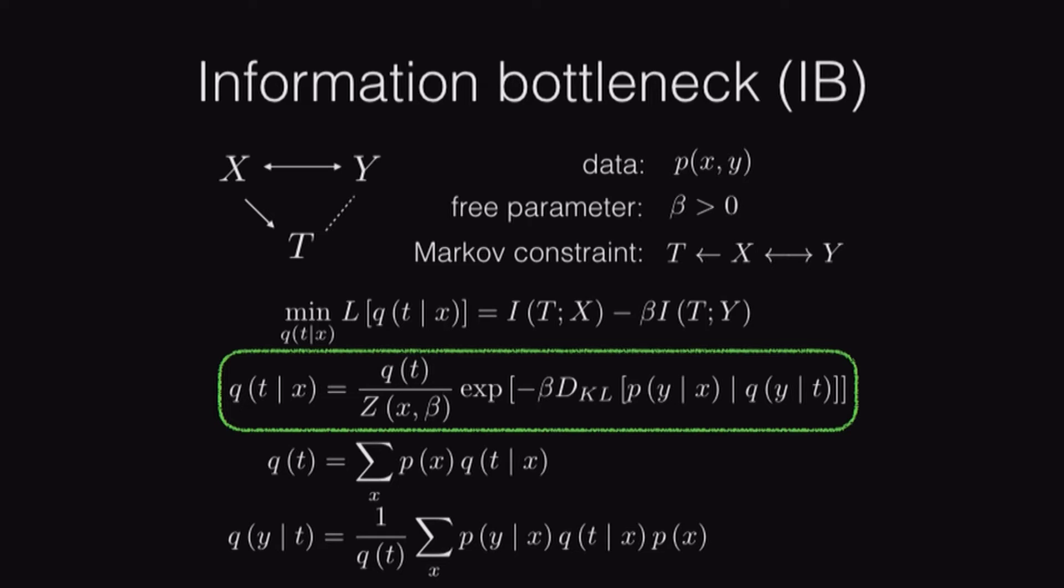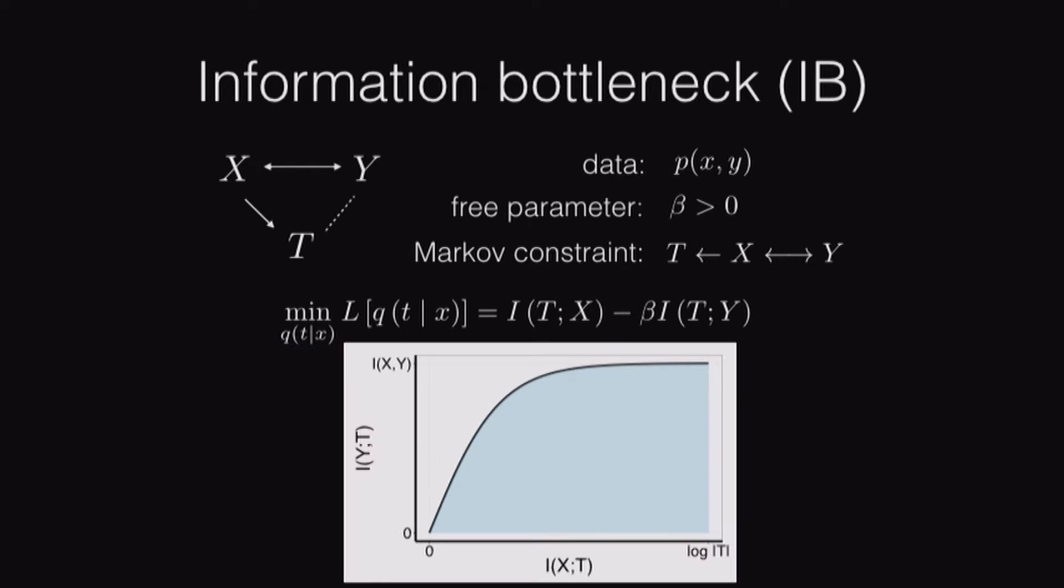Note that this solution is a function of beta. It's common practice to visualize the full set of solutions using a curve called an IB curve. The IB curve plots the relevance term on the y-axis and that compression term on the x-axis. This is implicitly a function of beta, so we're sweeping out small beta from the bottom left to large beta at the top right. The curve saturates because at some point we're extracting all the information that X has about Y. That's why it saturates with the mutual information between X and Y. Anything below that curve is feasible, anything above, infeasible.